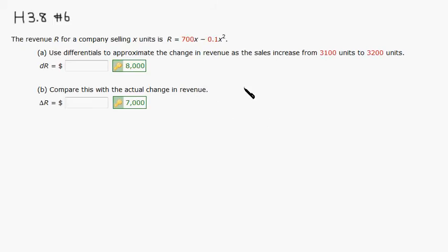Okay, let's look at homework 3.8 number 6. First, let's find the value of dx, which is the same as delta x. The sales increased from 3100 to 3200, so this is just 3200 minus 3100, which is going to be 100.